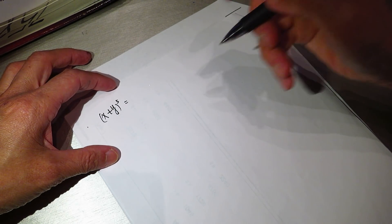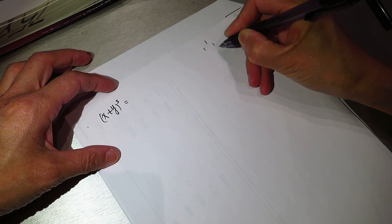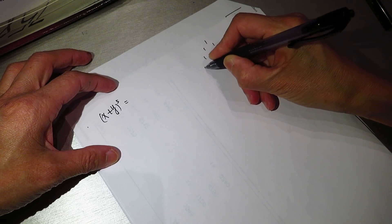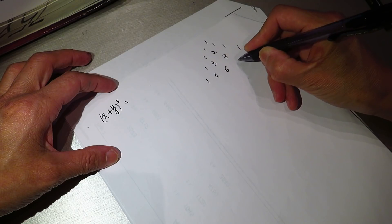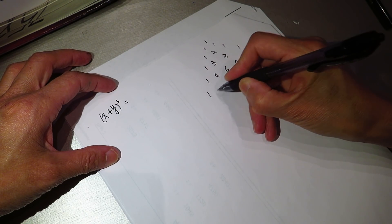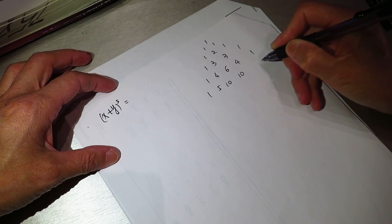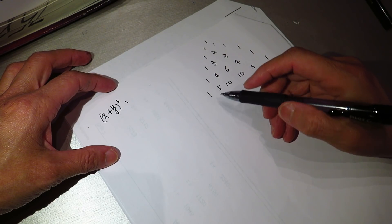We can know one, one, one, one, two, one, one, three, three, one, one, four, six, four, one, one, five, ten, ten, five, one.